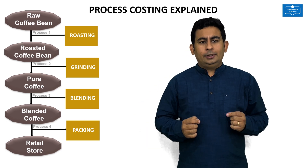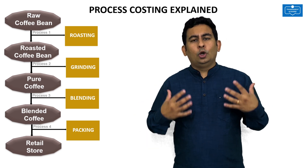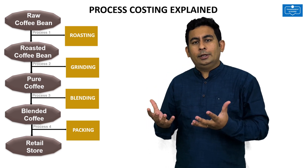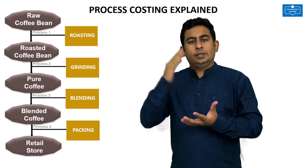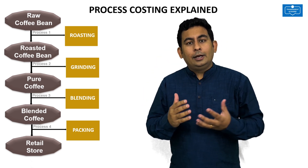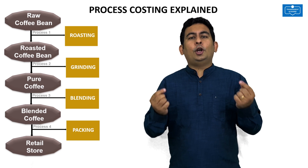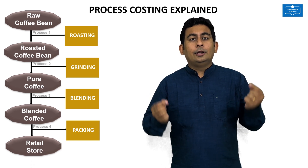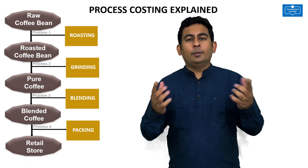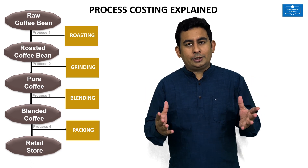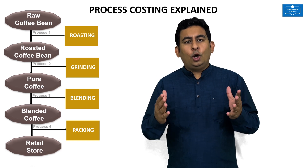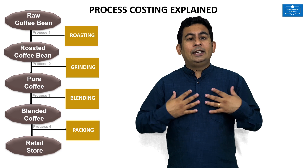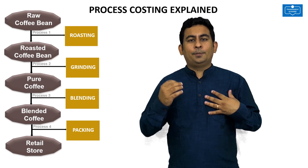A good management will always want to know what is the cost of the product, and the cost of this coffee powder is the total cost of all the 4 processes. A good management would also like to know what is the cost of the product at the end of each process, and process costing exactly gives you that information. Process costing is a method in which we account for the cost of each process separately and we get to know the cost of the product at the end of each process.